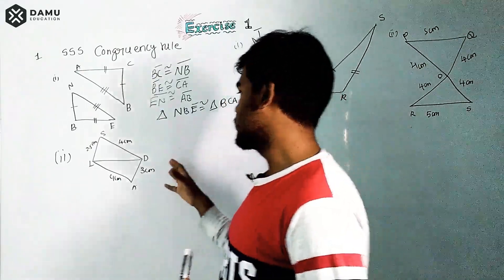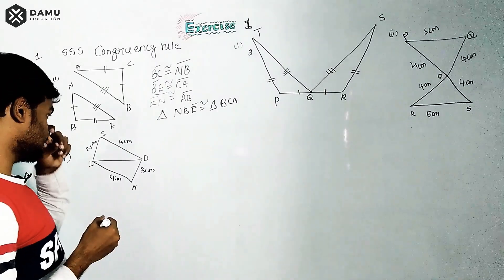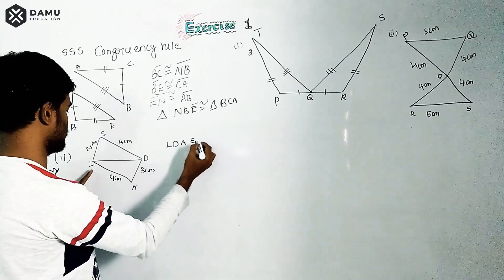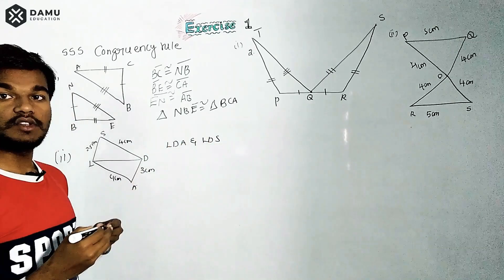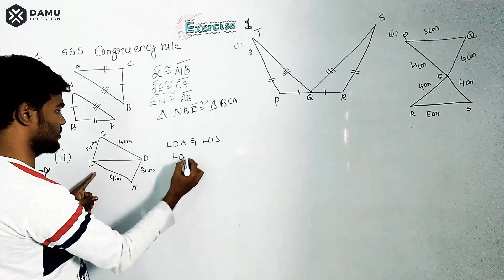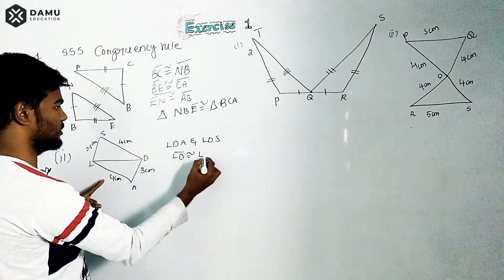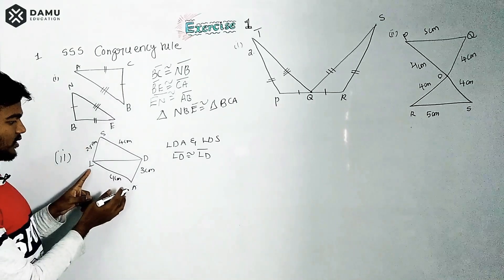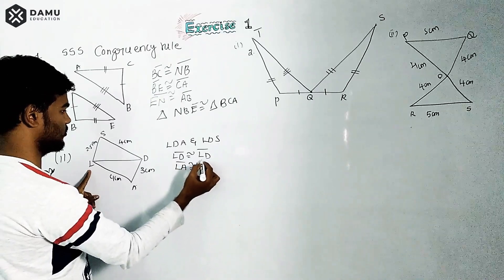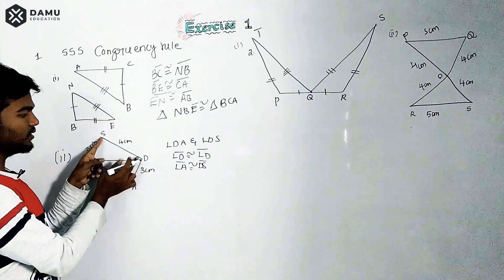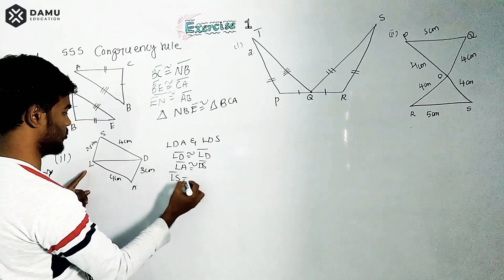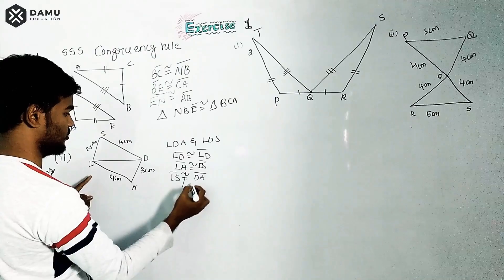Moving to the second set of triangles. Let's take two triangles: LDA and LDS. We check: LD is congruent to LD (common side). Next, LDA's side is congruent to DS in that triangle — so that side matches. Then we check the remaining sides.